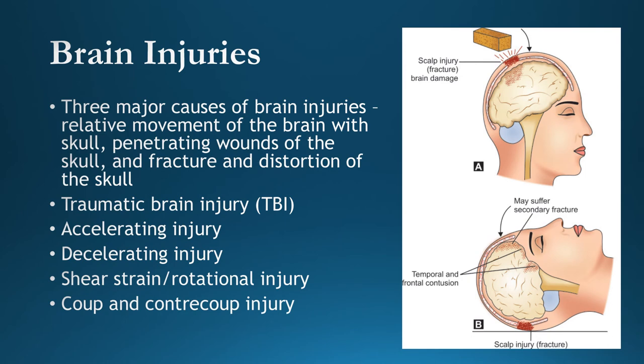Brain injuries are also called traumatic brain injuries. At the time of head injury, three types of brain damage are generally seen: diffuse neuronal injury, contusion, and laceration — occurring alone or in combination. Edema of the brain, intracerebral hemorrhage, etc., are secondary phenomena occurring soon after or some time after the injury. The cerebral part or ventricular region is generally damaged.